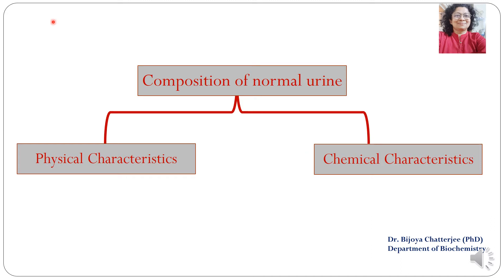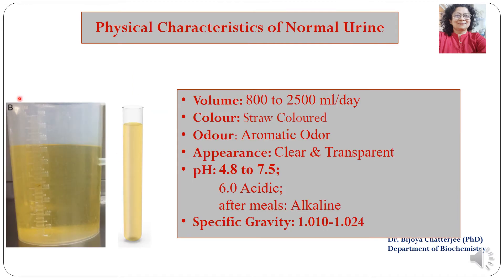To examine the composition of normal urine, we begin with physical characteristics and then proceed to chemical characteristics. The six parameters checked in physical examination are: volume, color, odor, appearance, pH, and specific gravity. Just by looking at these physical characteristics, a lot can be understood about the urine sample.